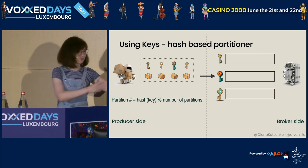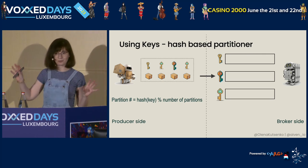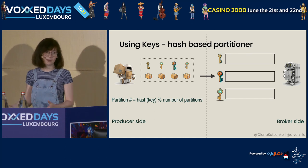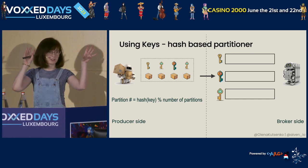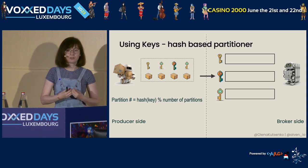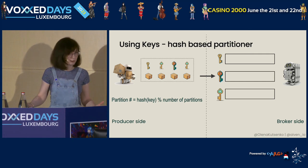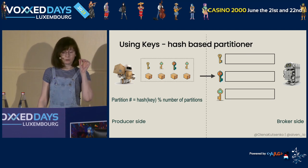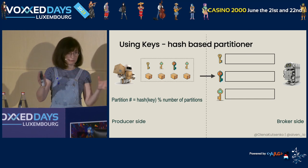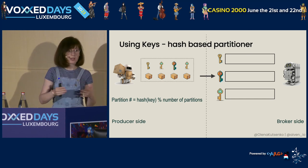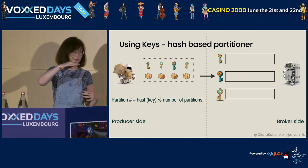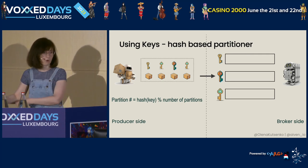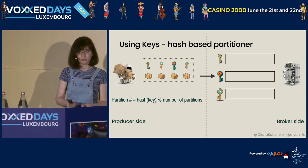In distributed systems you write data across different servers and different locations. When you start reading the data, you might have a question: which record was first, which was second, which was third? It's pretty difficult to figure out across different machines. But the simple solution is to use the key to store data that needs to be kept in order all in one partition. Because it's just a log file where we append data one by one, when we read the data we can be sure that we read it in the same order as it was initially written.